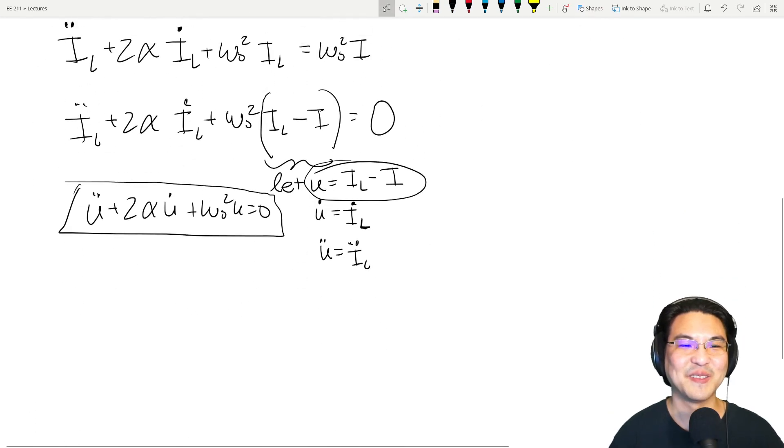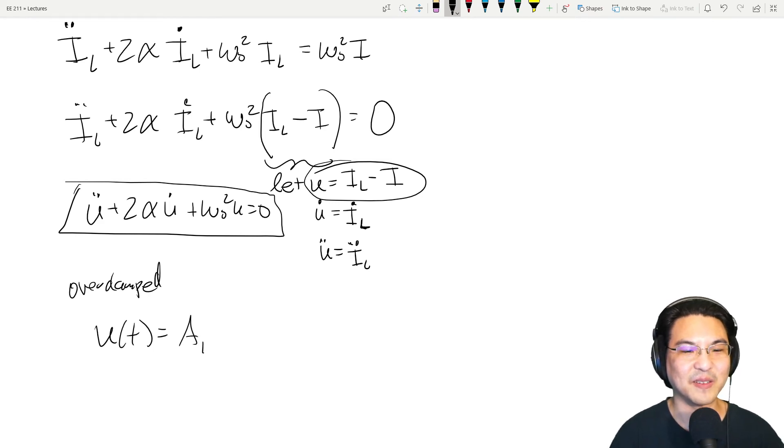It's the same thing. The only difference is you have, when you're done, so whatever solution you have, for example, let's say it's overdamped. And then u of t is like this, so something that looks like this. But then this is in terms of u, we need to go back to i. So when you go back, i is u plus I_L. So when we change this back, it'll look more like this plus I_L. That's it. That's the only difference.